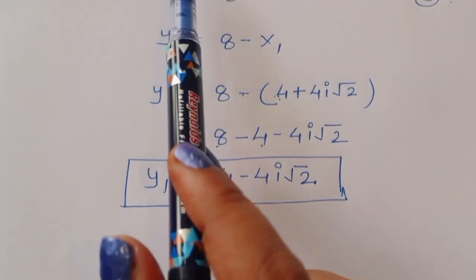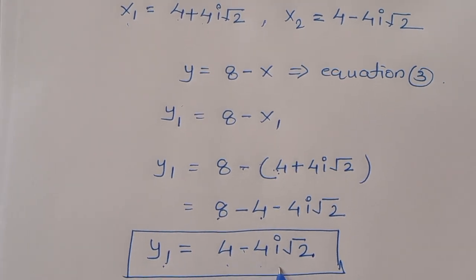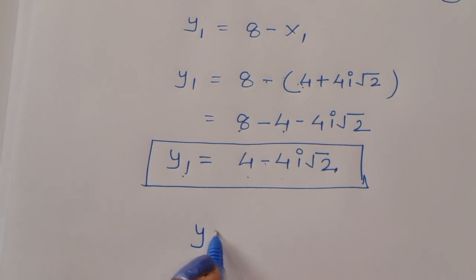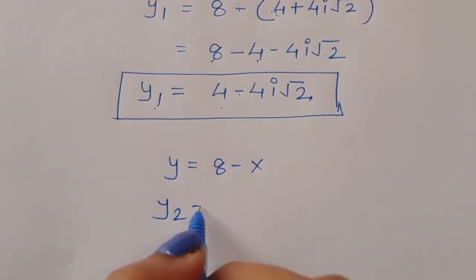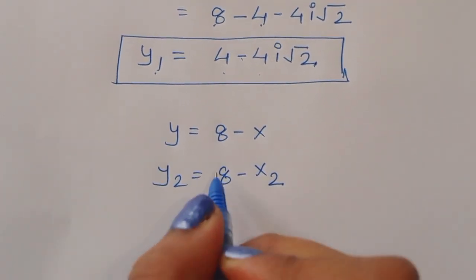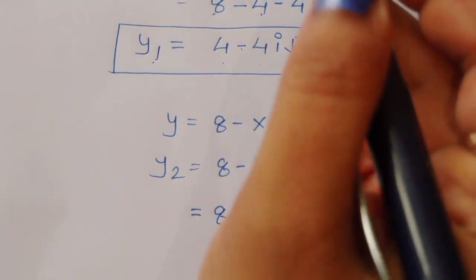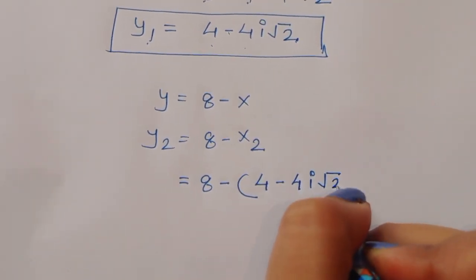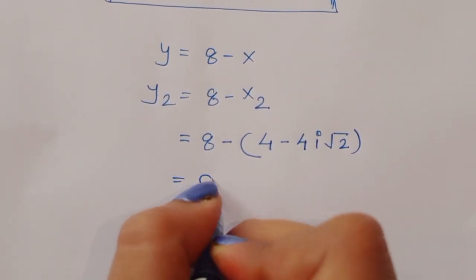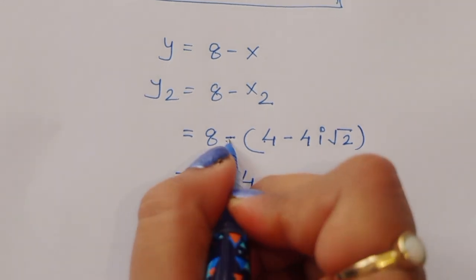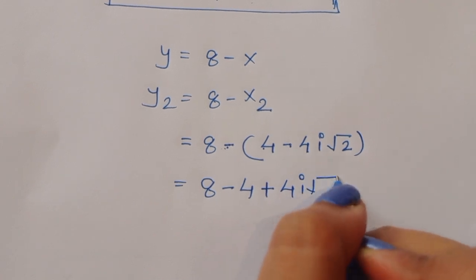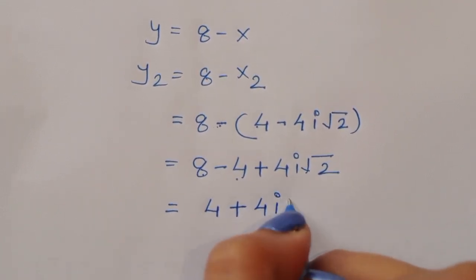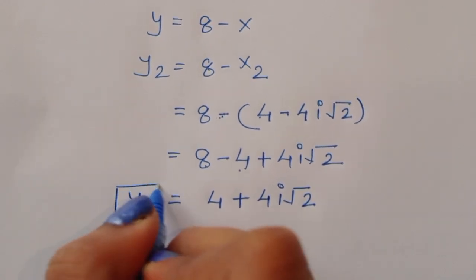So when x1 equals 4 plus 4i square root of 2, y1 equals 4 minus 4i square root of 2. Now for y2: using equation 3, y2 equals 8 minus x2. Since x2 equals 4 minus 4i square root of 2, we get y2 equals 8 minus (4 minus 4i square root of 2), which equals 4 plus 4i square root of 2.